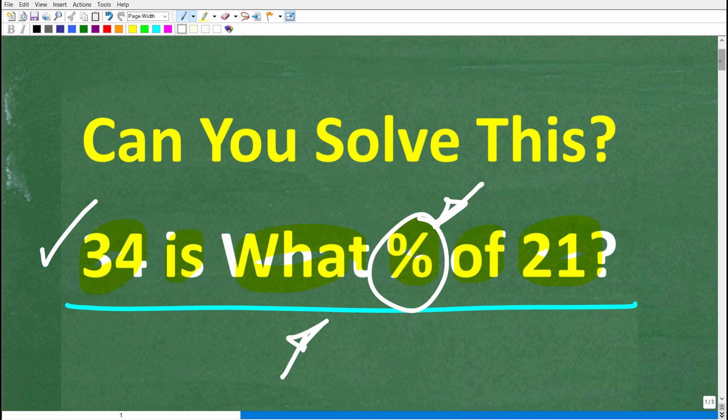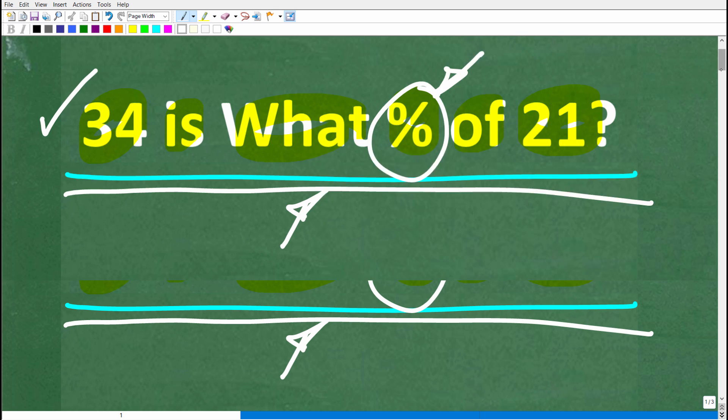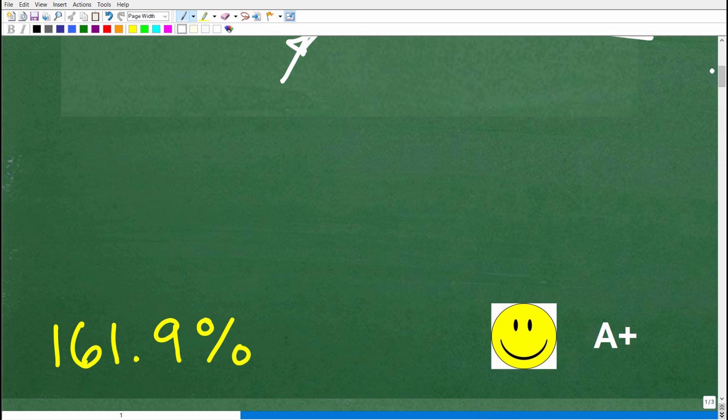Okay, so let's go ahead and take a look at the answer again. 34 is what percent of 21? Well, the correct answer is the following, 161.9 percent.